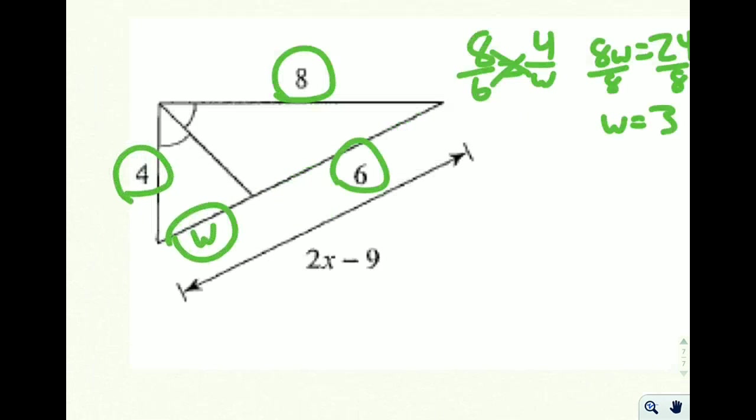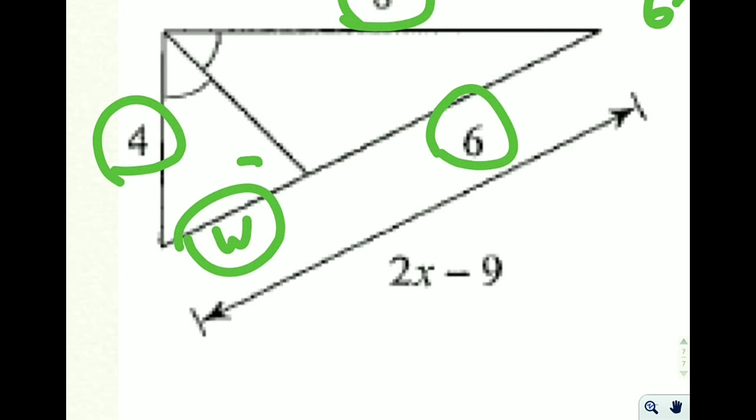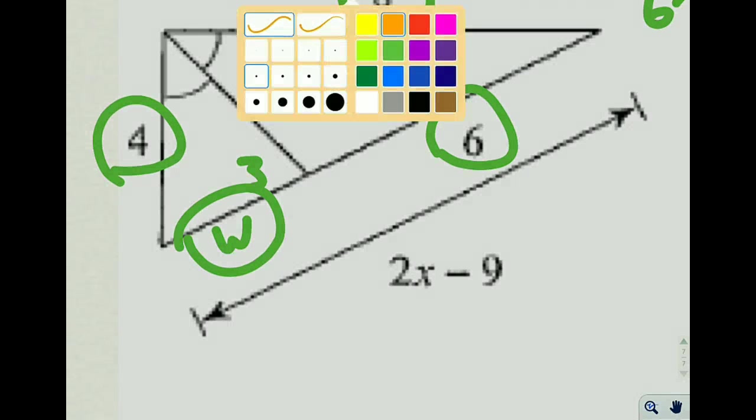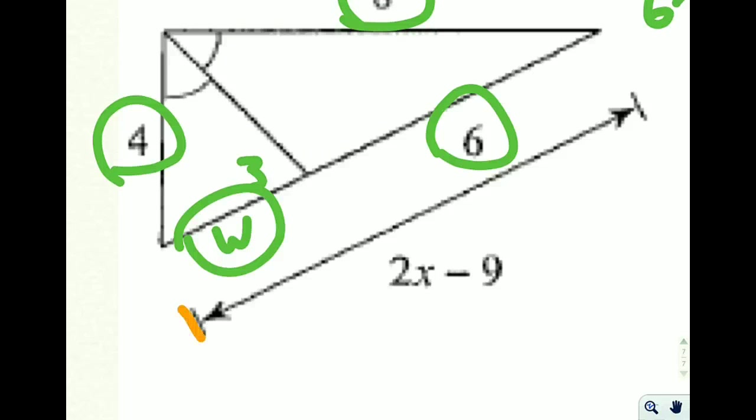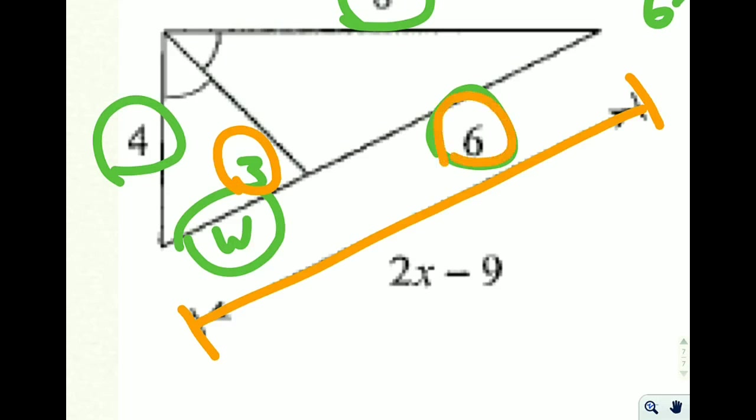So according to our calculations, this little side right here is 3. Now let's actually answer the question, let's figure out what x is. We have to go from here all the way out to here, and we know that that whole length is 2x minus 9. But we also know that if this is 3 and this is 6, this whole length is also going to be 9.